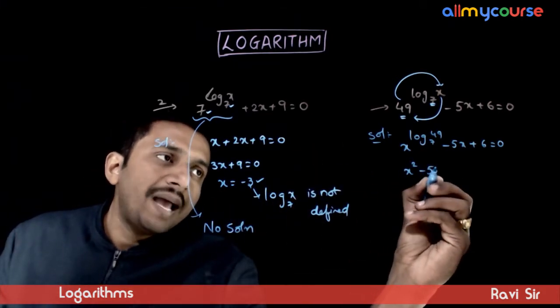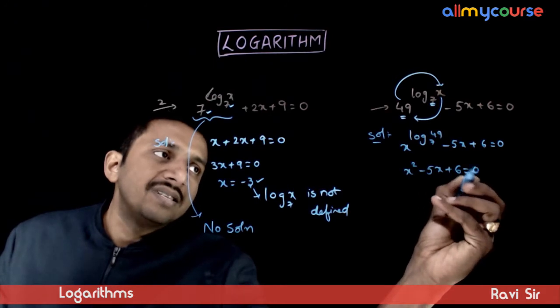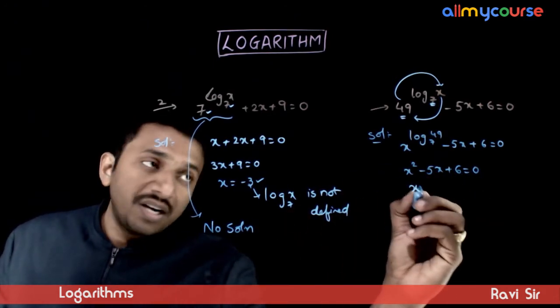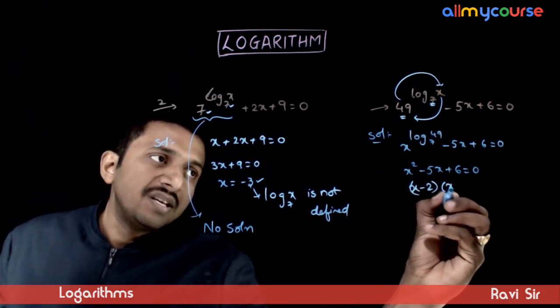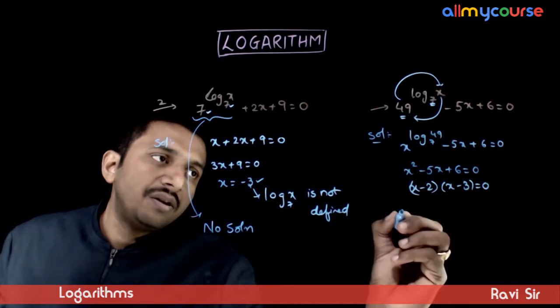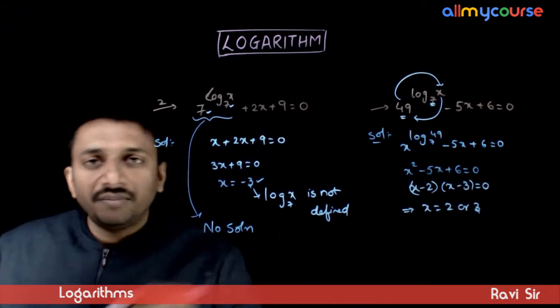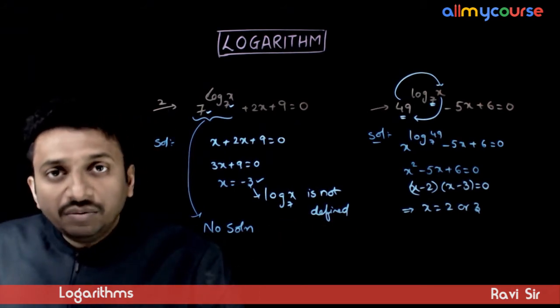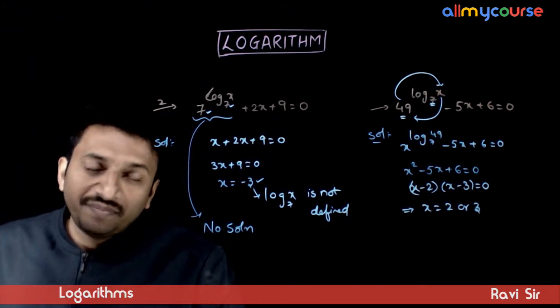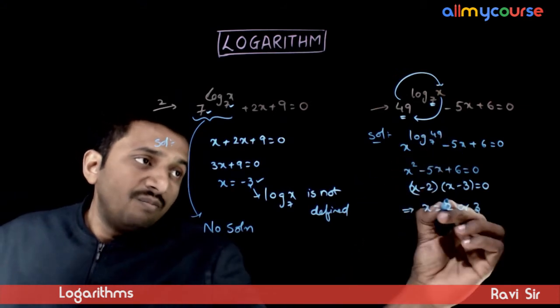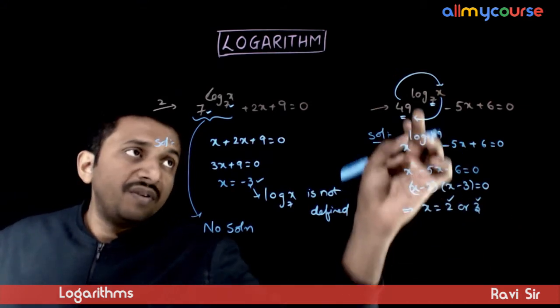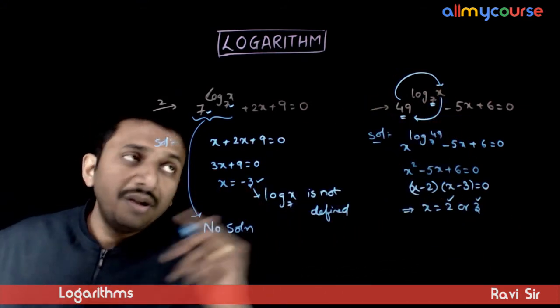So x square minus 5x plus 6 is equal to 0. This is a quadratic equation. x minus 2 times x minus 3 is equal to 0. This implies x is equal to 2 or 3. x is equal to 2 or 3. Both are positive numbers for which log is defined, so there is no problem. Hence, these two are the solutions to this equation.